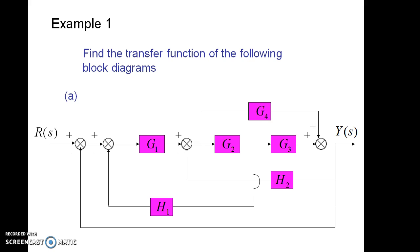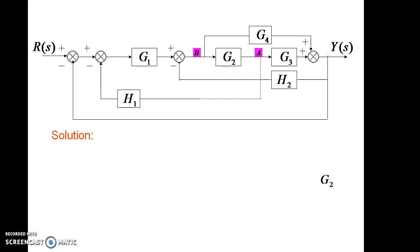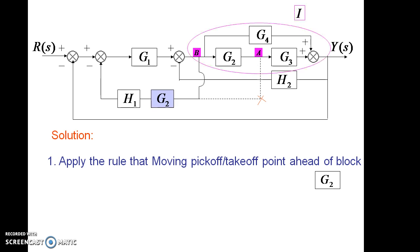First example: there is a system with complex connections, and by applying different rules we can have the solution. The loop which is marked as I is to be resolved first. We have to normally take the innermost loop, then after simplifying that, the outermost loop is to be considered. In the first case, if we move the take-off point ahead of a block, then we will have the two blocks G2 and G3 in cascade. So by combining them we can have the gain factor as G2 G3.